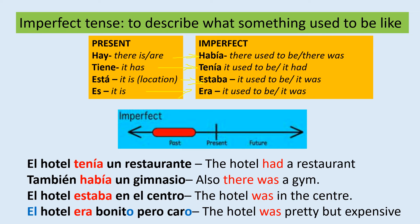And, el hotel era bonito, pero caro — the hotel was pretty, but expensive. I'm reminding you here, as you can see highlighted in blue: el, bonito, and caro — just reminding you about agreements. El hotel, bonito, and caro are all masculine and singular forms. So these are some examples of how to use the imperfect tense.